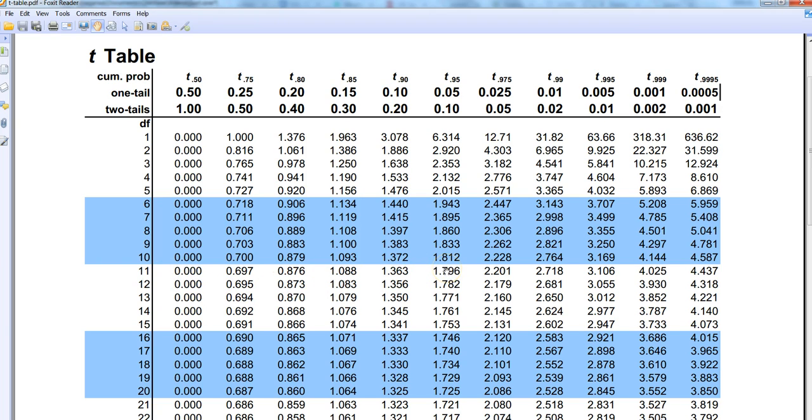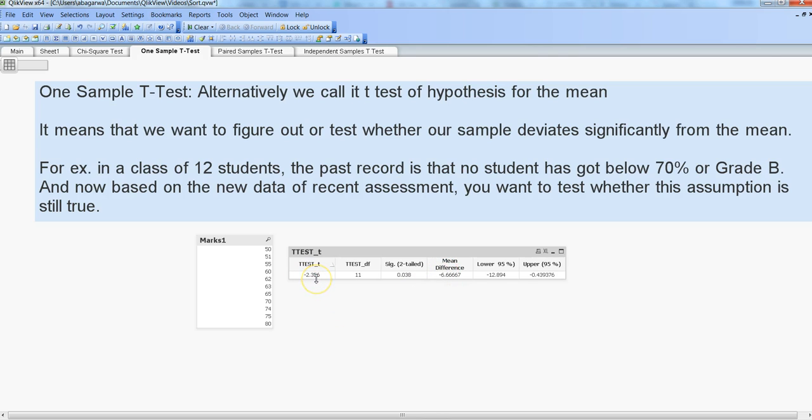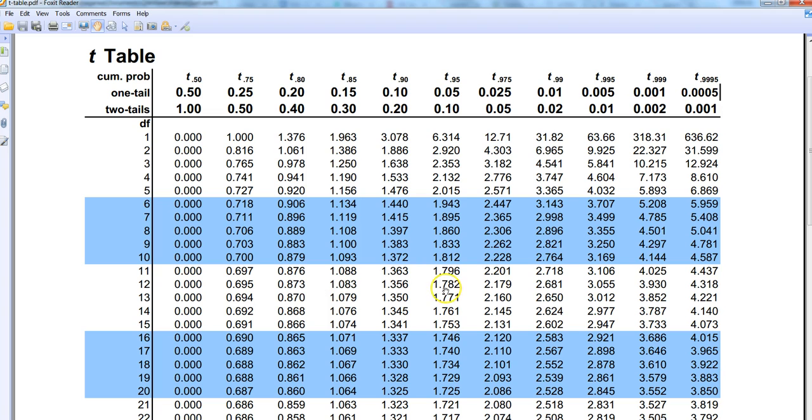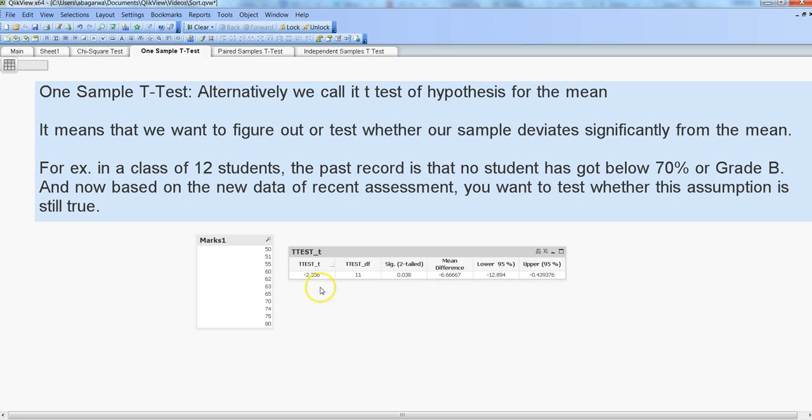Since we're doing a left-tailed test, or we want to look at the negative side, we'll say that minus 1.796 is our threshold. This means if any value is going below minus 1.796, then we're going to reject the null hypothesis. At 11 degrees of freedom, 1.796 on the negative side - the value we got is minus 2.356, which is below minus 1.796.